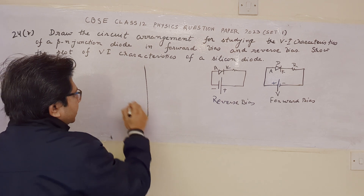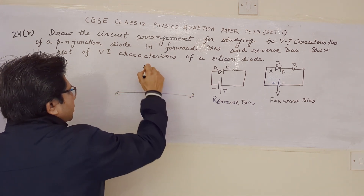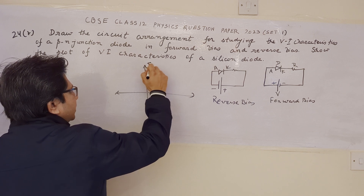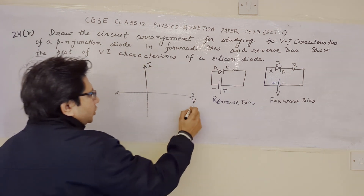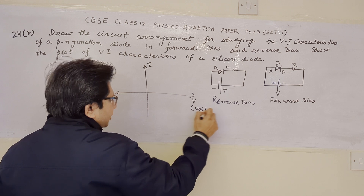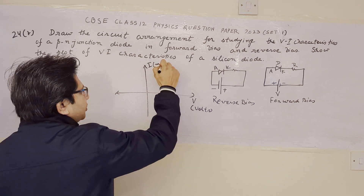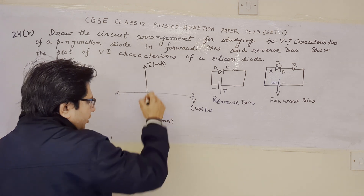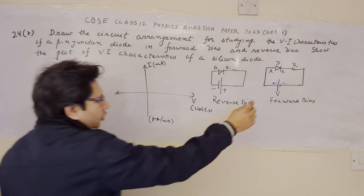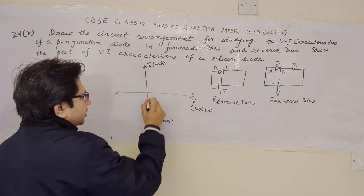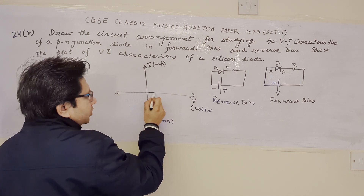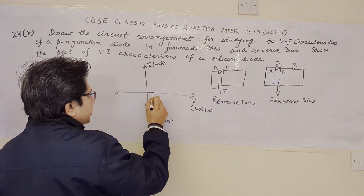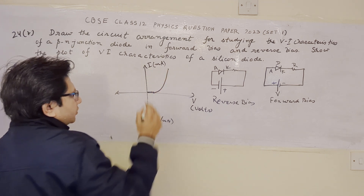We also have to draw the characteristic curves. The characteristic curve is plotted between the current and the voltage. The voltage is on the volts scale. The current is in milliampere scale for the positive y-direction and in the microampere or nanoampere range for the negative y-direction. For the forward bias circuit, up to a certain minimum voltage the diode is not in the on state.